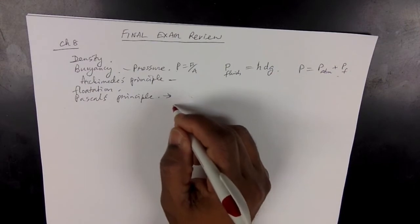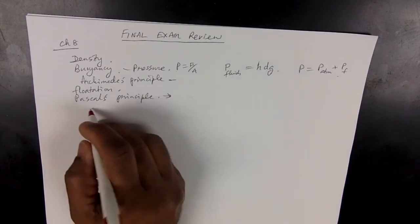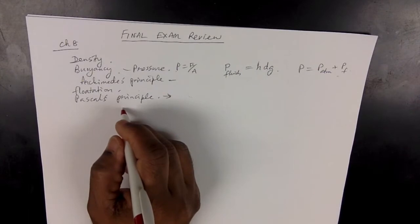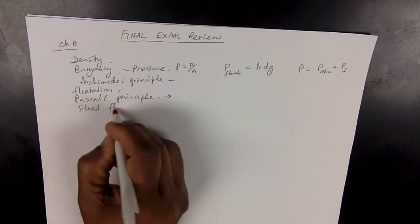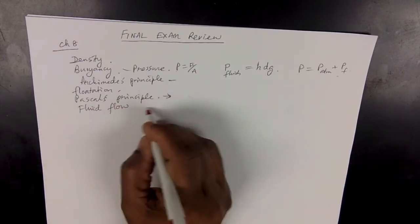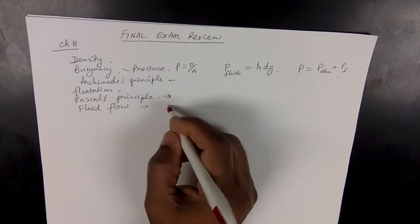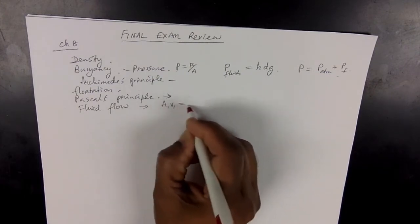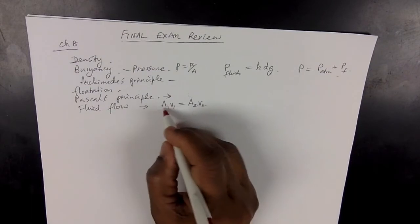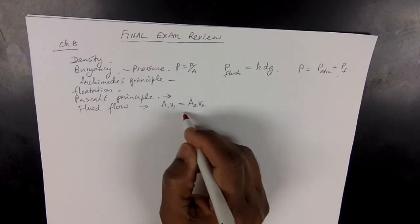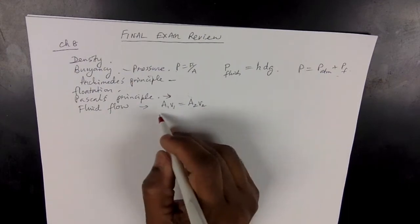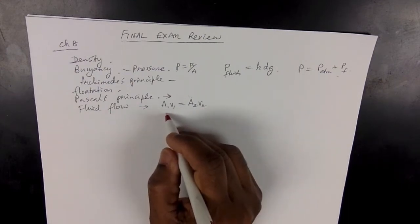The next concept is fluid flow, explained on pages 280–281. The equation of continuity is A1V1 equals A2V2. That means wherever the area is small, the velocity has to be bigger — the speed of the fluid should be higher. That concept is discussed on pages 280–281 and you should have an idea of it.